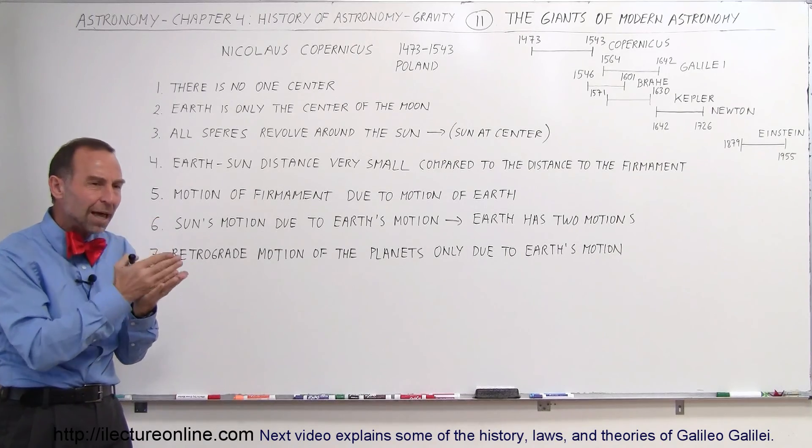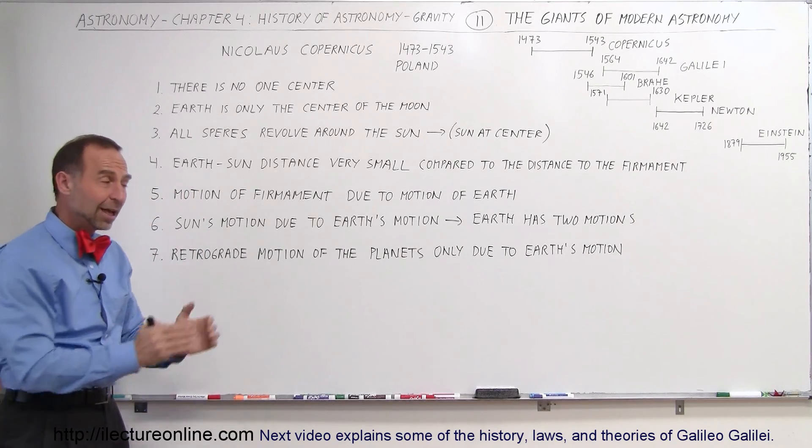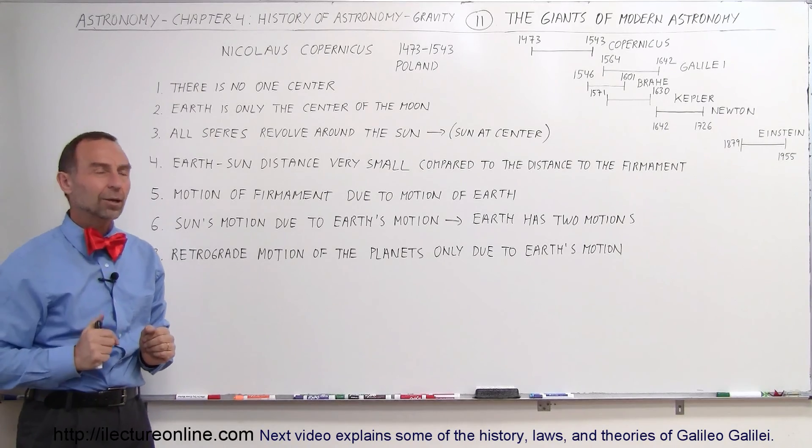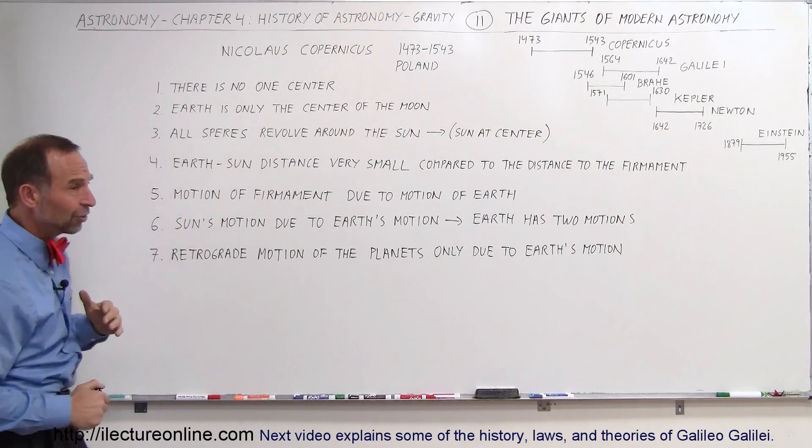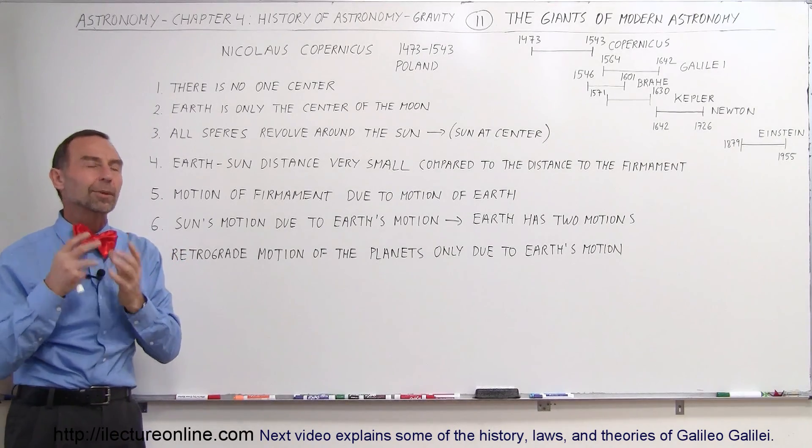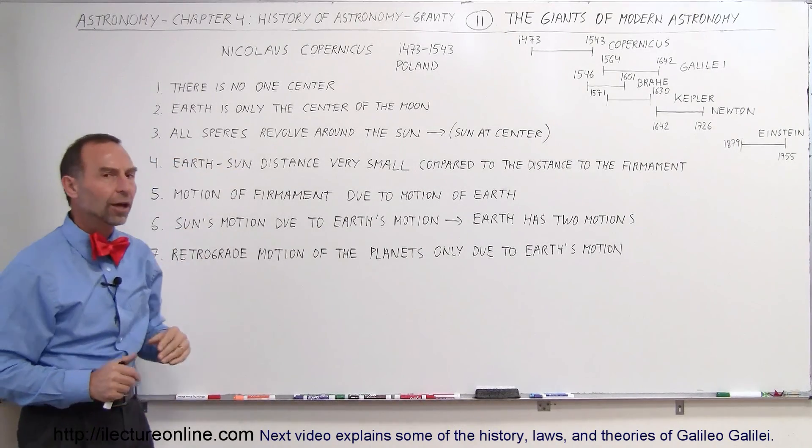He just went very systematically and says, this I know because that's what I observed. And this I know because I observed that. So the third statement he made, he said, all the spheres. And when he talks about the spheres, he talks about the planets. He said, all the spheres revolve around the sun.